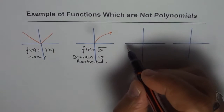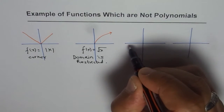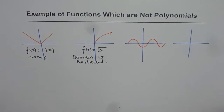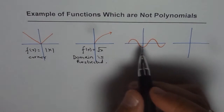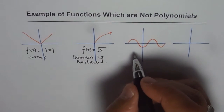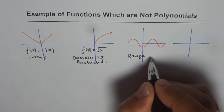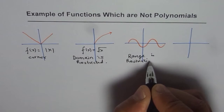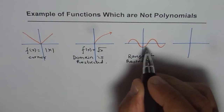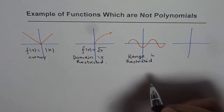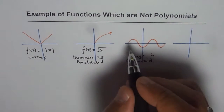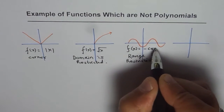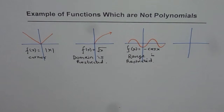Now let's take another function which is like a sine function. Here the domain is not restricted, but the range is restricted. Because of the way I've drawn it, I'll write this as f(x) = −cos(x). So that is not a polynomial.